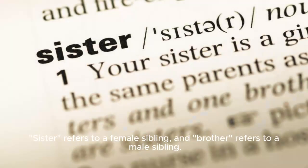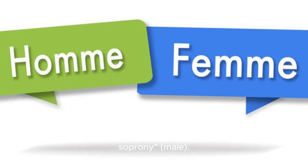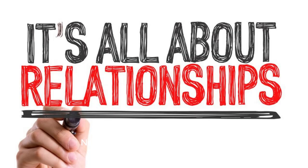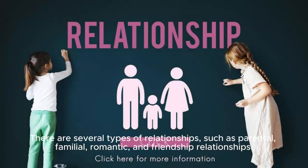Sister refers to a female sibling and brother refers to a male sibling. Other related terms include fraternity female and sovereignty male. Now let's talk about relationships — there are several types of relationships such as parental, familial, romantic, and friendship relationships.